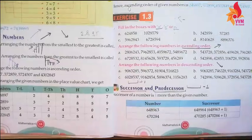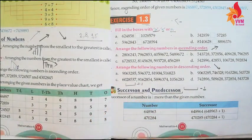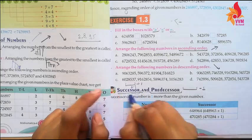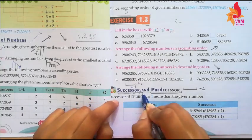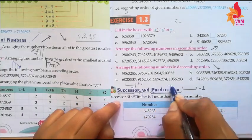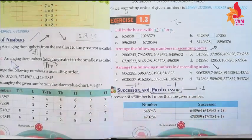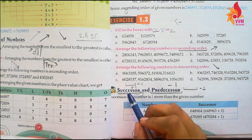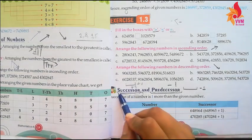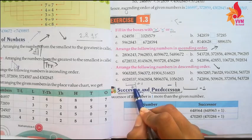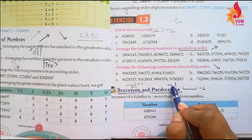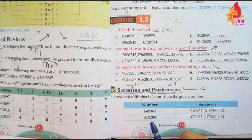Then our topic is Successor and Predecessor. The successor of a given number is obtained by adding 1 to it. The predecessor of a given number is obtained by subtracting 1 from it. So: given number + 1 = Successor, and given number − 1 = Predecessor.